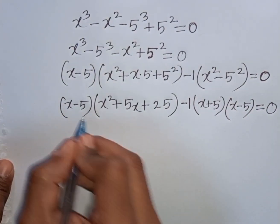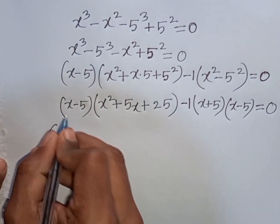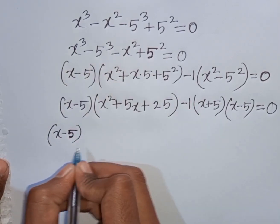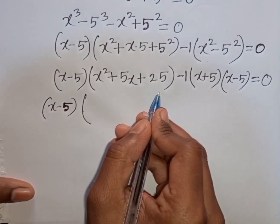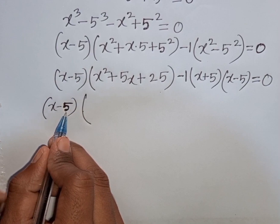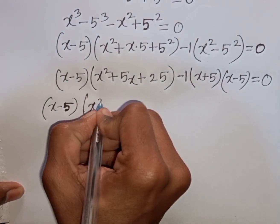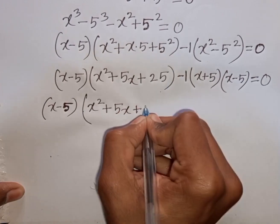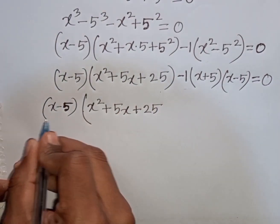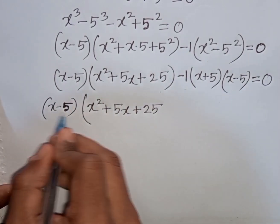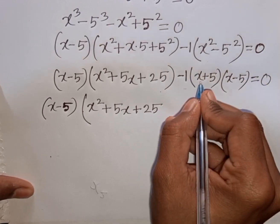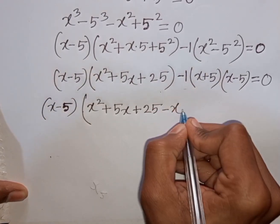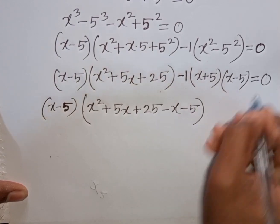We see that (x - 5) is a common factor throughout. Taking out (x - 5), after cancellation we get: (x - 5) times [x² + 5x + 25 - 1(x + 5)] = 0. Expanding -1(x + 5) gives -x - 5, so the bracket becomes x² + 5x + 25 - x - 5 = 0.